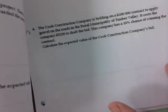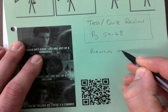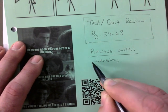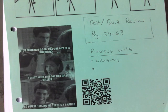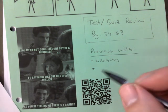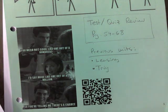One more thing you should probably add to the front of your booklet: previous units. There's going to be a question on leasing. Trig - so cosine law, sine law. That's it.